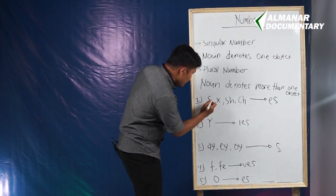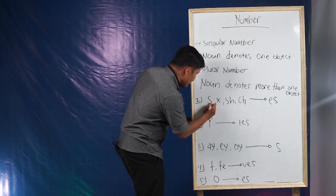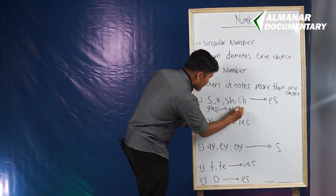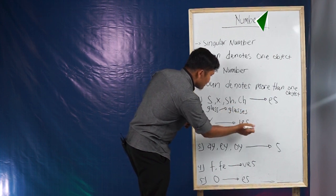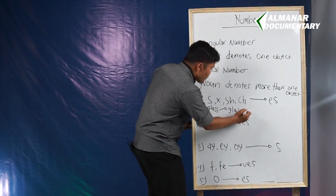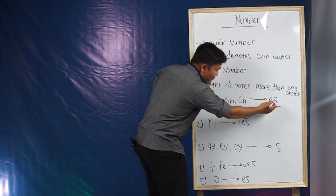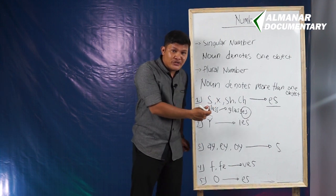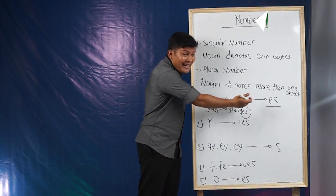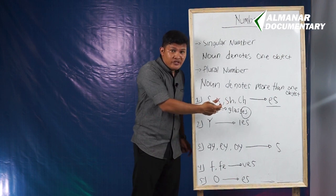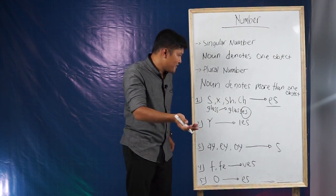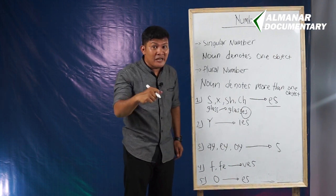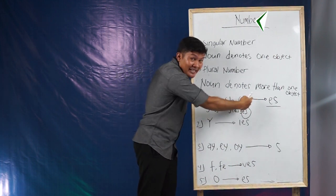So 'glass' becomes 'glasses' — you just put ES at the end. Or maybe 'box' — you just need to put ES to make 'boxes'. Or words ending in SH or CH, like 'punch' — 'punch' becomes 'punches'.